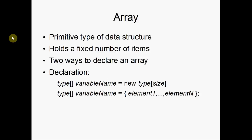An array is a primitive type of data structure. It holds a fixed number of items, and there are two ways to declare it. The first way is the type, then open and closed square braces, the variable name, then the equals sign, then the word new, and then the type once again, and then the size inside the braces, and there should be a semicolon at the end.